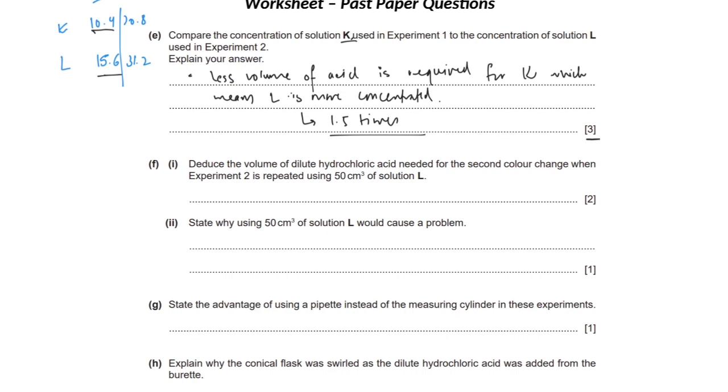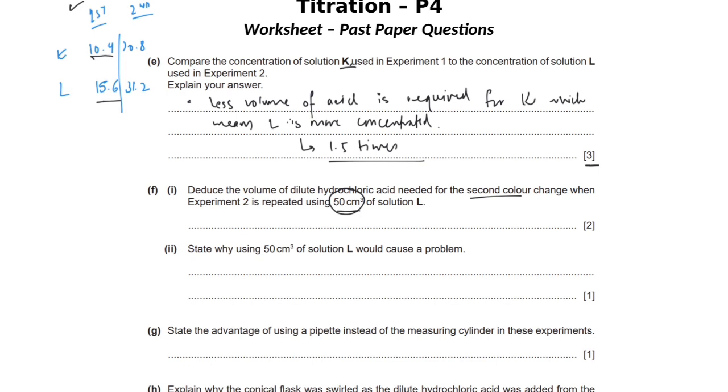For part F: deduce the volume of HCl needed for the second color change if experiment two is repeated using 50 cm³ of solution L instead of 25 cm³. The volume for the second color change in experiment two was 31.2 cm³. Since the volume of L has doubled, we multiply by 2: 31.2 × 2 = 62.4 cm³. However, using 50 cm³ of solution L would cause a problem — it would be out of the range of the burette.